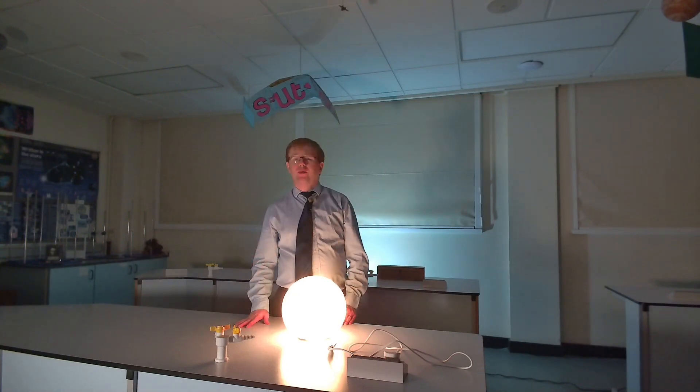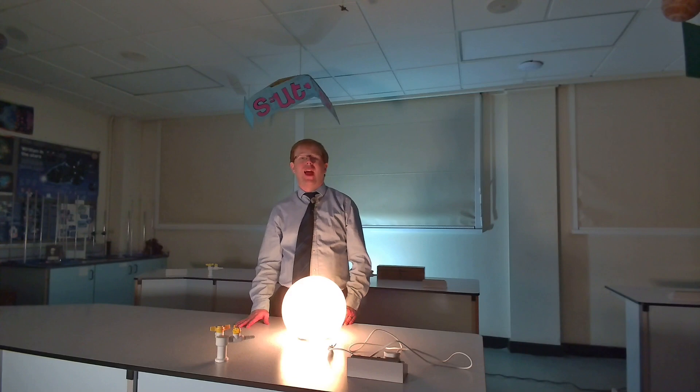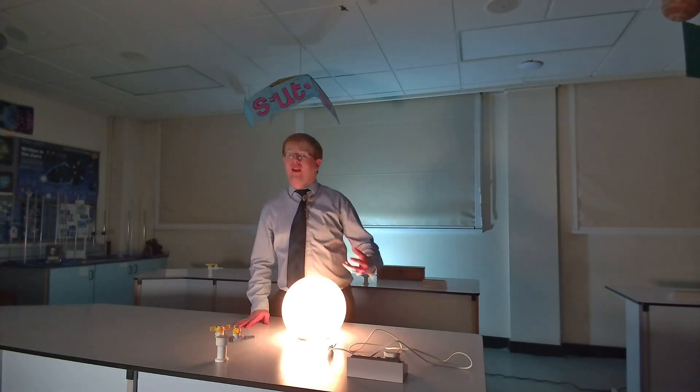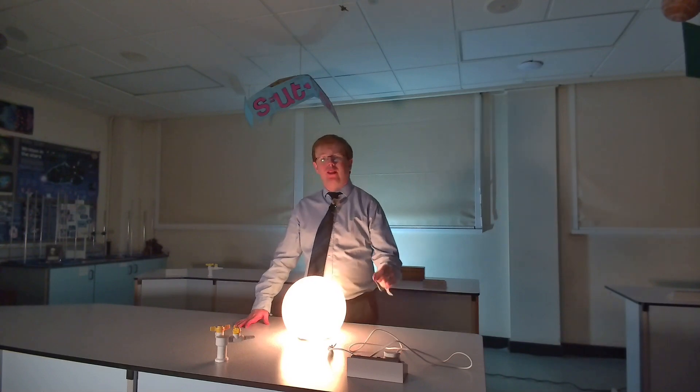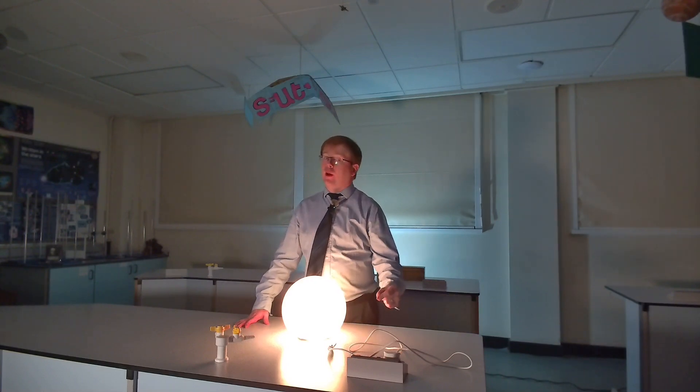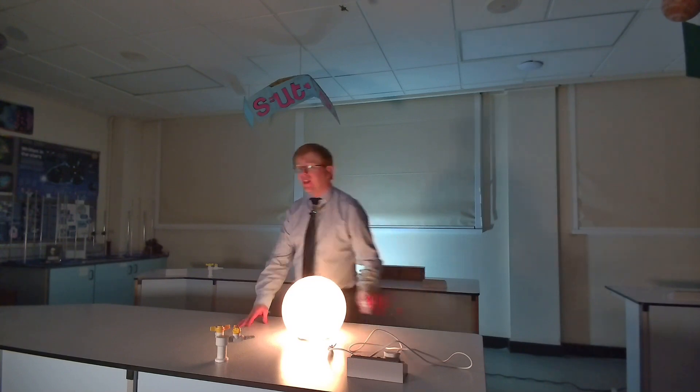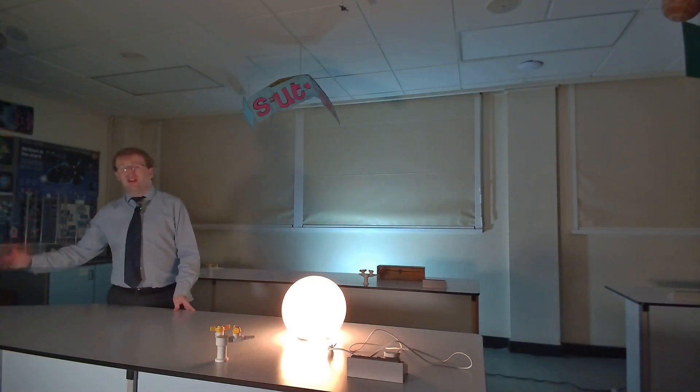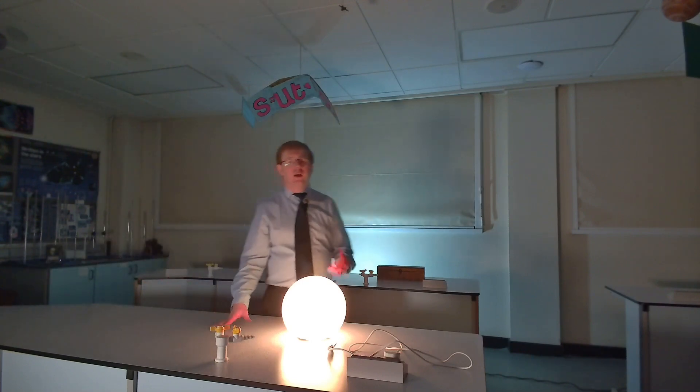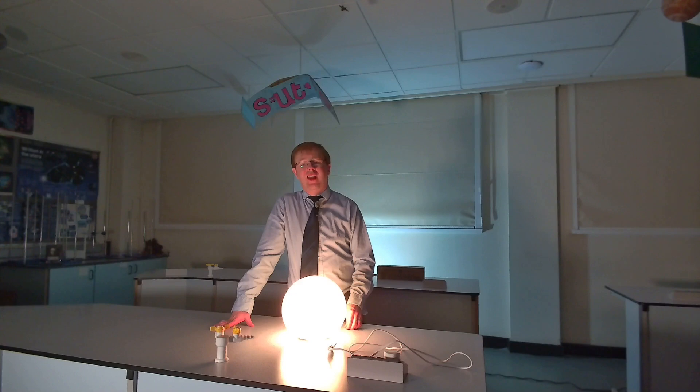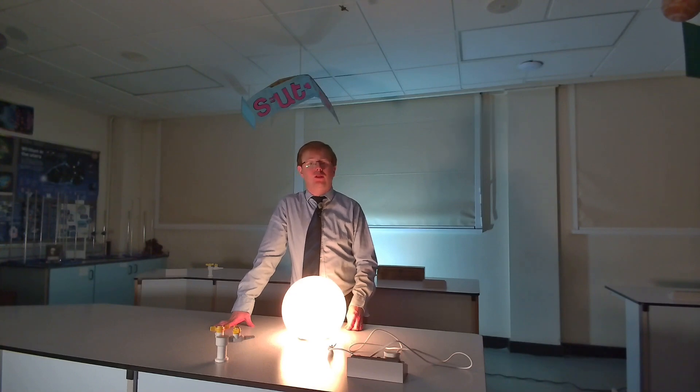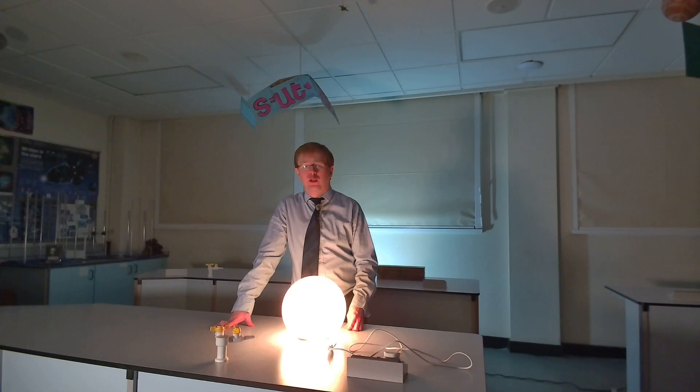For comet Borelli, it has an orbital period of 6.85 years, and its distance from the sun varies from the closest, the perihelion, of 1.3 astronomical units. An astronomical unit is the average distance between the earth and the sun, to its furthest, the aphelion, of 5.9 astronomical units. This is very close for a comet. Comets are generally considered short periods if their orbits last below 200 years, so 6.85 years makes this an extremely short period comet.